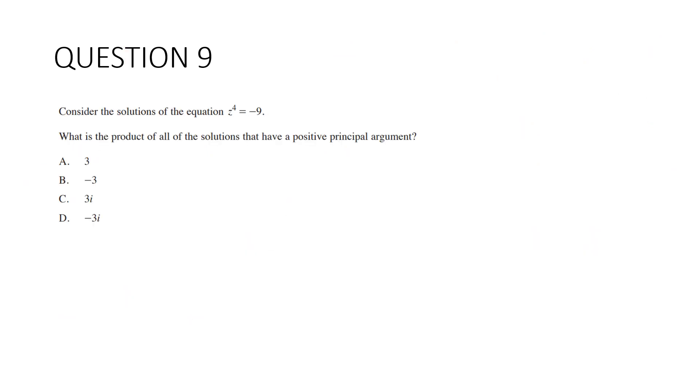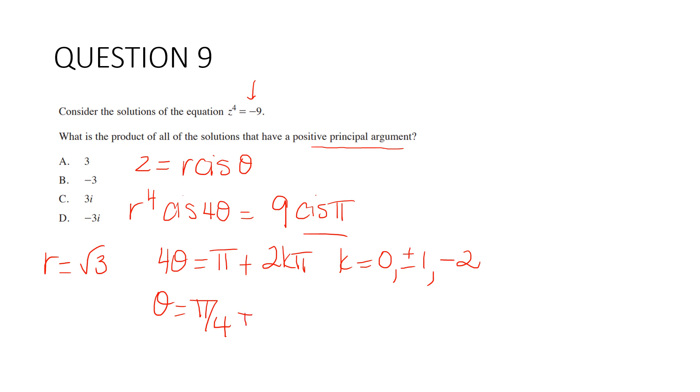Question 9. Consider the solutions to z to the power of 4 equals negative 9. What is the product of all solutions that have a positive principal argument? Let z equal r cis θ. So r to the 4 cis 4θ equals 9 cis π. So r equals root 3 (it can only be positive). 4θ equals π plus 2kπ, where k can equal 0, plus or minus 1. So θ equals π/4 plus kπ/2.